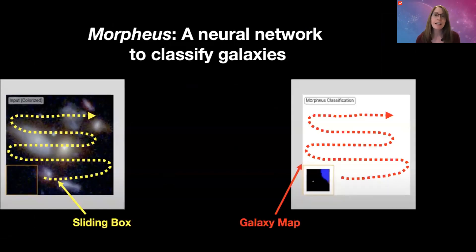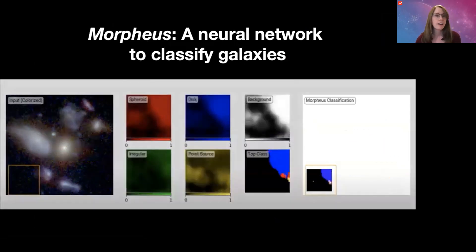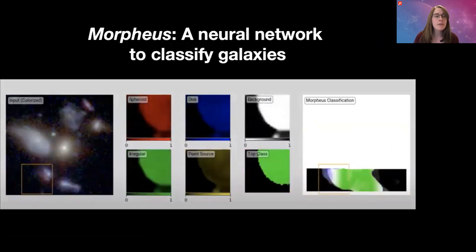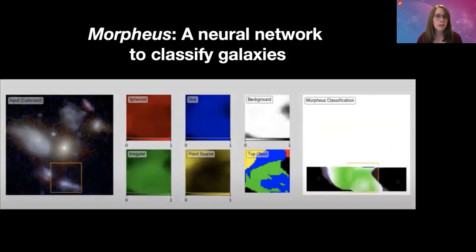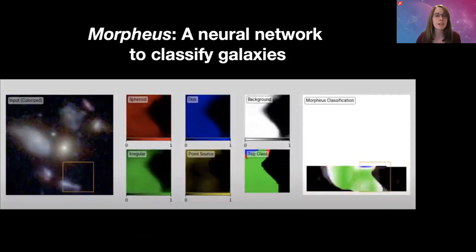And then over on the right, as it's doing that, you'll see the galaxy map being built up over time, also pixel by pixel. The boxes that you're seeing in the middle are showing, for each pixel that the box passes over, how well that fits into each of the galaxy types.